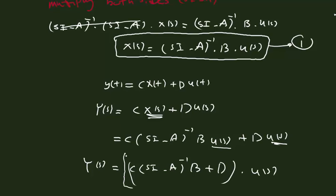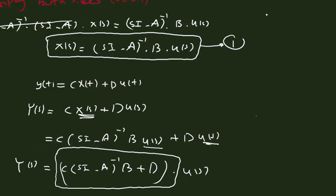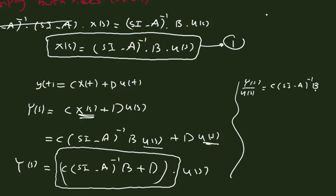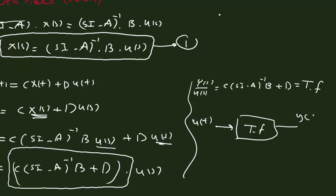This expression is our transfer function. Dividing both sides by U(s), we get: Y(s)/U(s) = C·(sI minus A)^(-1)·B plus D. This is the transfer function relating input U(t) to output Y(t).